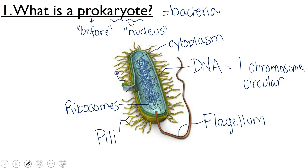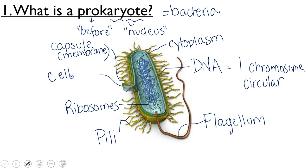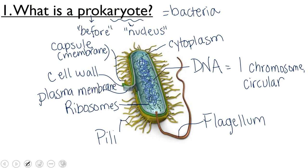Now let's take a look at the outer three layers of our bacteria. The very outermost one is called the capsule, and that capsule is made of membrane. Our next layer in is the cell wall. And inside the cell wall is another membrane, which we usually call our plasma membrane. Bacteria are unique in this outer structure — they're the only ones that go membrane-wall-membrane and have two membranes on the outside of them.